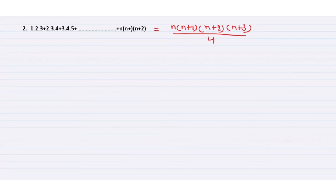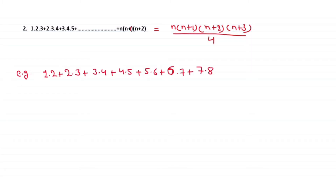So if you want to check it, you can write the general term, apply the summation, and you'll get terms involving n³ and n² and n — and after solving you will get this formula. You can use this formula directly to find the sum.